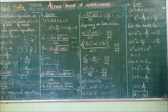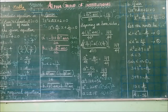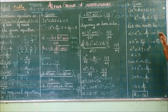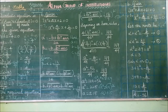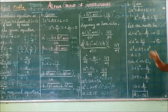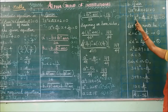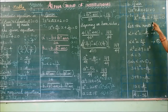Everybody look at page 122, sixth problem. If one root of the equation 3x² + kx + 81 = 0 is the square of the other, find k. Take one root as alpha and the other as alpha squared. Divide the equation by 3: x² + (k/3)x + (81/3) = 0, i.e., x² + (k/3)x + 27 = 0.